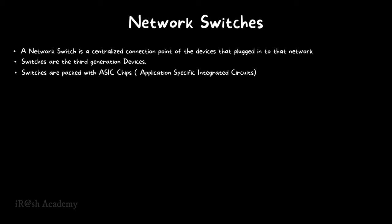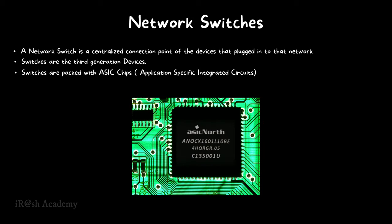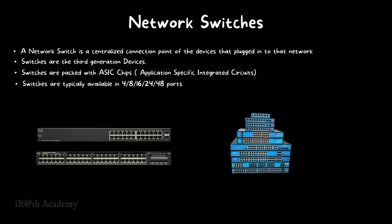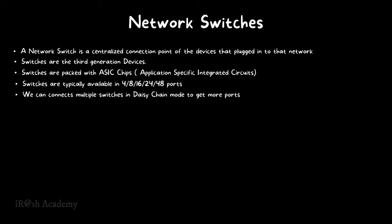Switches are packed with ASIC chips — Application-Specific Integrated Circuits. Switches function based on their hardware performance, and ASIC chips help network switches perform switching operations at wire speed. Switches are typically available in 4, 8, 16, 24, and 48 ports. You can decide which model to use based on your port requirements; for example, if you need fewer connections, there is no need to purchase an expensive 48-port switch.